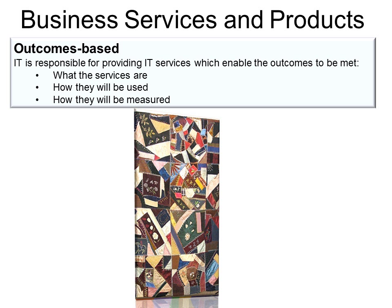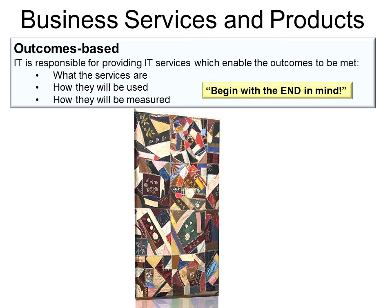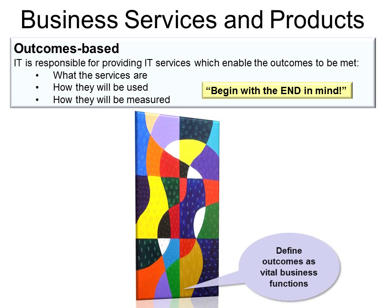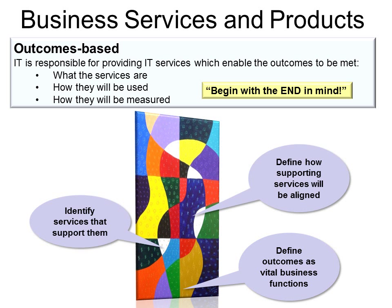Business services and products should be outcomes-based — in other words, begin with the end in mind. Think about the whole unit before you ever start designing, otherwise you'll come up with a crazy quilt. Instead, we want a unified look. We want to define outcomes as vital business functions, identify services that support them, define how supporting services will be aligned, and support the entire chain of dependencies. Begin with the end in mind.